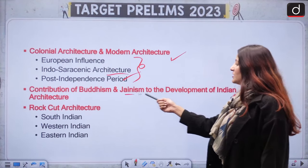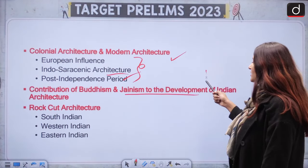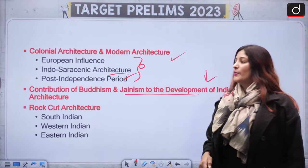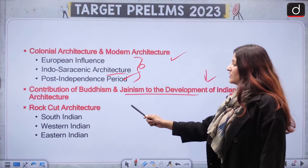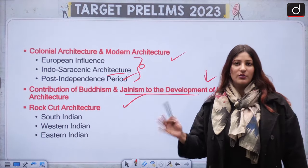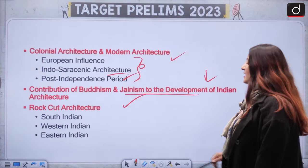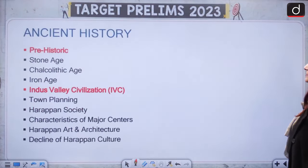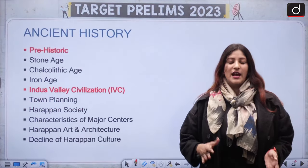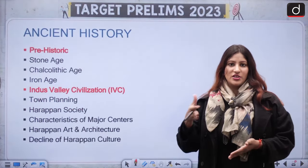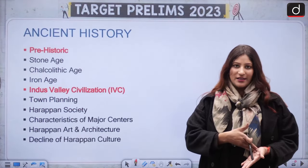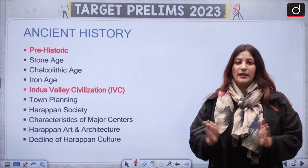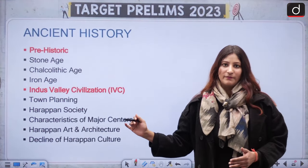The contribution of Buddhism and Jainism to the development of Indian architecture is also important, in which rock-cut architecture of South, West, and Eastern India will be asked. All these are part of both Ancient, Medieval, and Modern history, but specifically we have clubbed them together under Art and Culture.